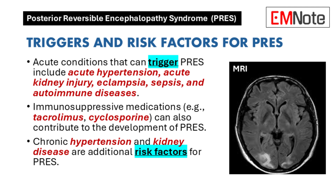PRES is frequently triggered by various acute conditions, particularly acute hypertension, acute kidney injury, eclampsia, sepsis, autoimmune diseases, immunosuppressive medications such as tacrolimus and cyclosporine, chronic hypertension, and kidney disease. Recognizing these triggers is essential for effective management.